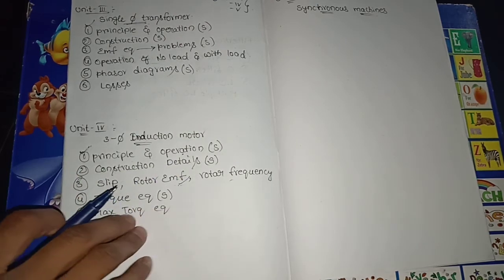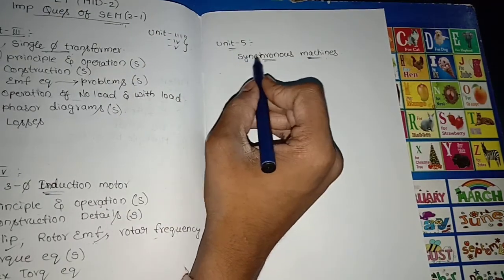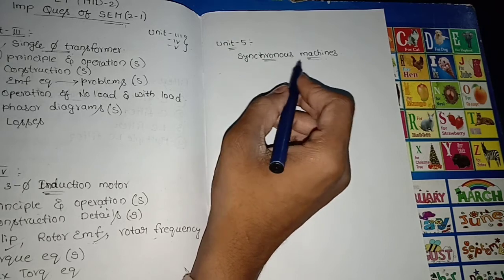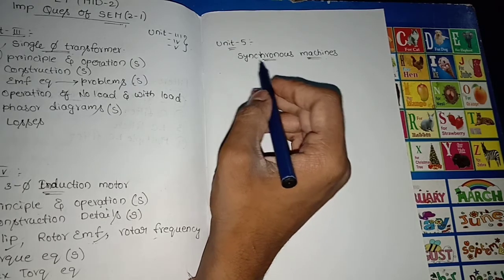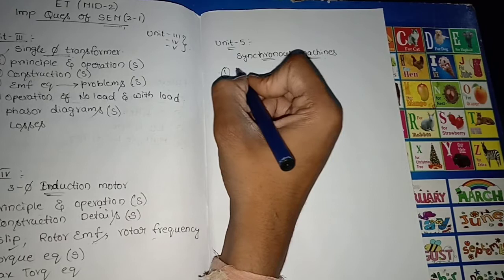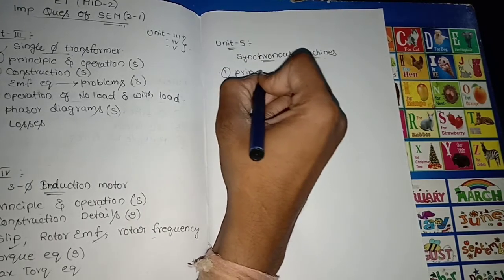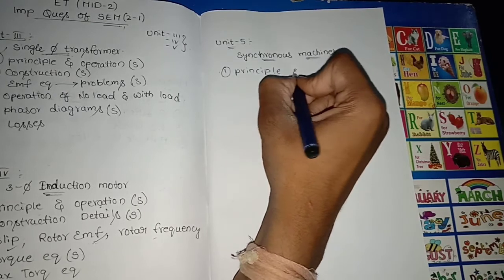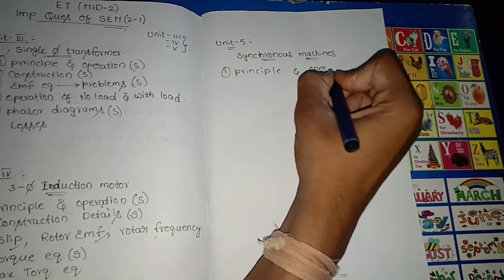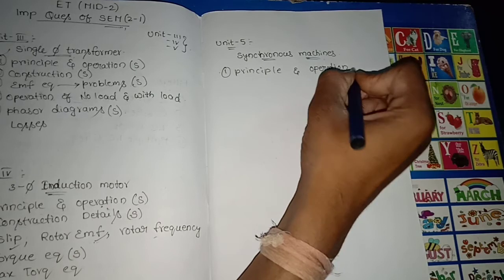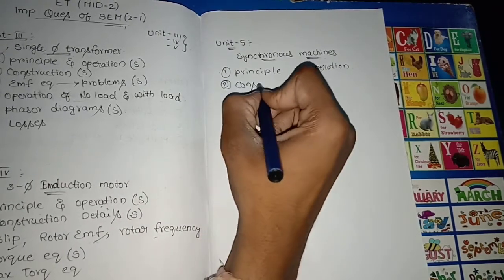Moving on to Unit 5, which covers synchronous machines. In this unit we have mainly 3 to 4 most important questions. The first is principle and operation of synchronous machines. The second most important question is construction.